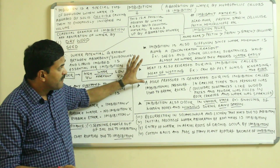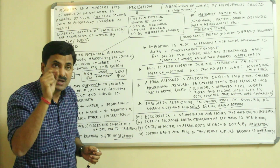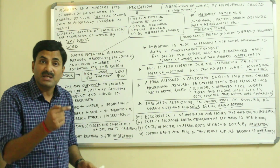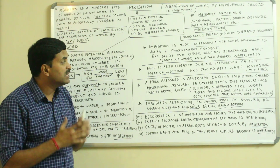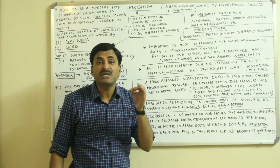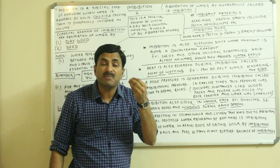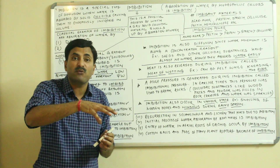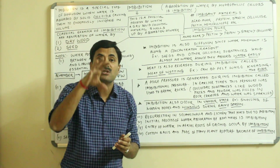One more important thing: during imbibition, heat is also generated. The heat released during imbibition is called the heat of wetting — the heat generated when wetting a colloidal substance. This heat of wetting can actually be felt when kneading wheat or maize flour at home. When you pour water into the flour and keep your hands in it, you feel warmth — that warmth is generated due to the heat of wetting.